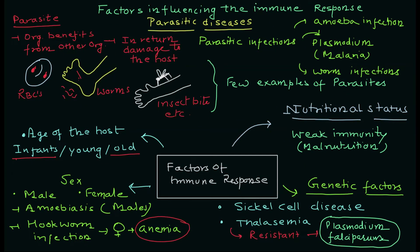Hello everyone. Today we will be discussing the factors influencing the immune response in parasitic diseases. As you can see on the screen, I have designed some illustrations showing some of the important parasites and the factors responsible for susceptibility to parasitic infections. We will discuss age, sex, genetic factors, and nutritional status. After this video, you will be able to understand what these factors are and how they work.